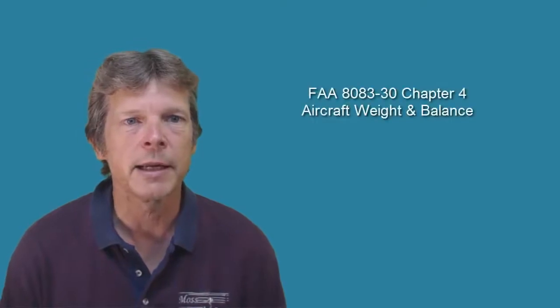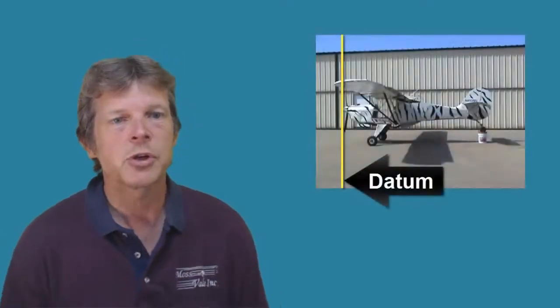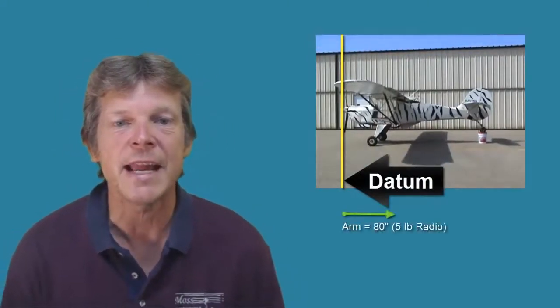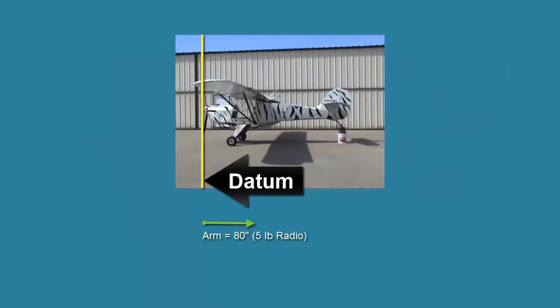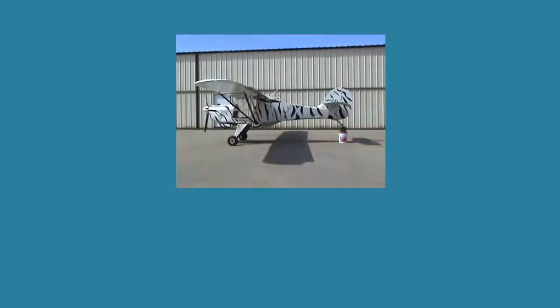In this example that we have in the FAA 8083-30, chapter 4, they show a 5 pound radio located 80 inches from the datum. And so if you take 5 times 80, you get an answer of 400 inch pounds. That is an example of the moment.